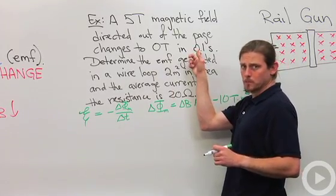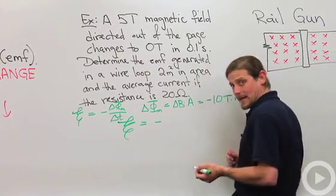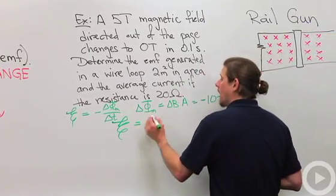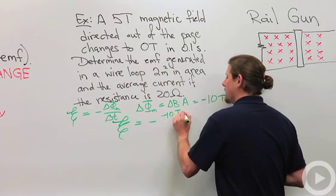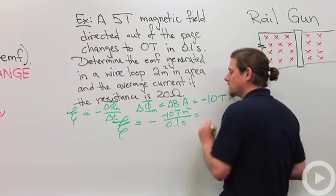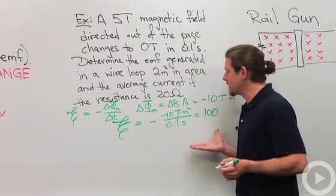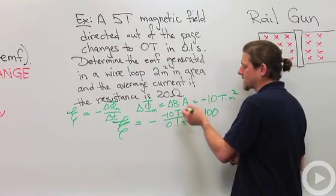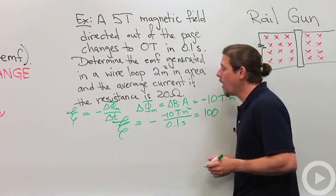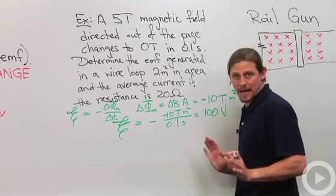What about the change in time? Well, the change in time is 0.1 seconds. So the EMF will be equal to minus, and I've got negative 10 Tesla meters squared over 0.1 seconds. And so that's going to give me 100. And what do you think the unit is? Well, we could work through what is a Tesla meter squared per second, or we could say it's an EMF, so it must be volts.